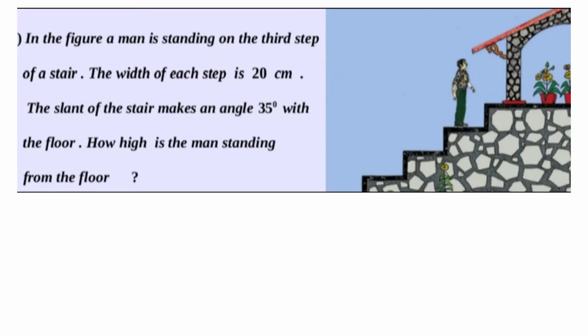First question: in the figure, a man is standing on the third step of a stair. The width of each step is 20 centimetres. The slant of the stair makes an angle of 35 degrees with the floor. How high is the man standing from the floor?